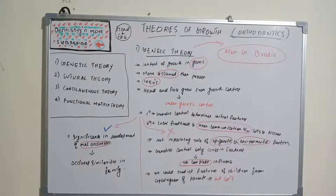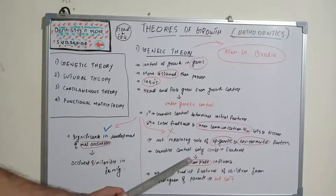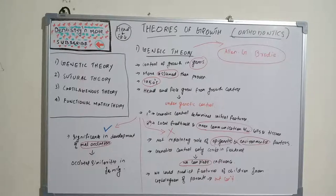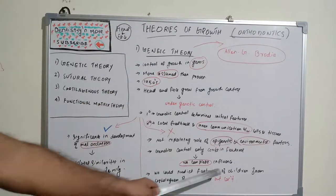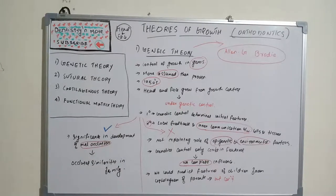Suppose if genetic theory is true, we could predict the features of children from the cephalogram of parents. If this is true, we can easily predict what would happen for children from the cephalograms of parents.